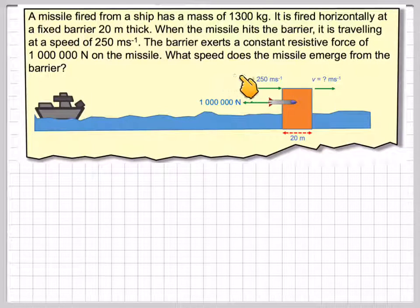What speed does the missile emerge from the barrier? So we've got a ship, we've got a missile that goes through this barrier which is 20 meters thick, has an initial velocity of 250 meters per second just as it hits the barrier, and we're asked to find the final velocity as it emerges from the barrier.